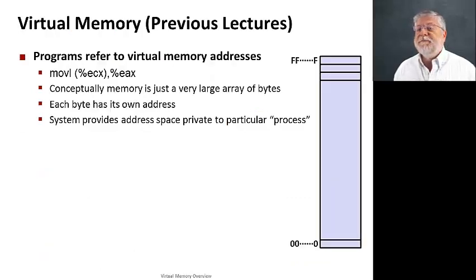Let's take a look at what we know about virtual memory so far. Programs refer to addresses in memory, and these are really virtual memory addresses. So every time we write an instruction like this and use an address, in this case an address stored in the register ECX, remember the parentheses tell us to go to that address in memory and get the value stored there, move it to a register in this case. What we're really doing is going to a 64-bit address, which may or may not exist physically in a particular place in memory, but exists virtually, in that we have this huge array of bytes. Each byte has its own address, and the system is going to provide a private address space for each one of our processes.